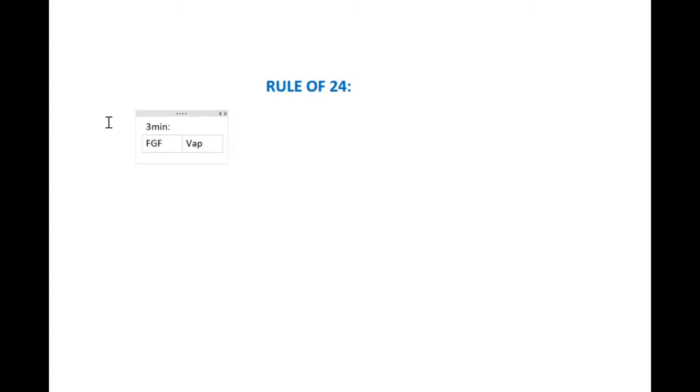For three minutes, you're going to set your fresh gas flow either to 2 liters and then your vaporizer at 12%, or you're going to set your fresh gas flow to 3 liters and 8%, or you are going to set it to 4 liters and your vaporizer to 6%. You'll see that all of these make up 24, so 2 times 12 is 24, 3 times 8 is 24, 4 times 6 is 24. That's where the rule of 24 comes in and that's going to be for three minutes.